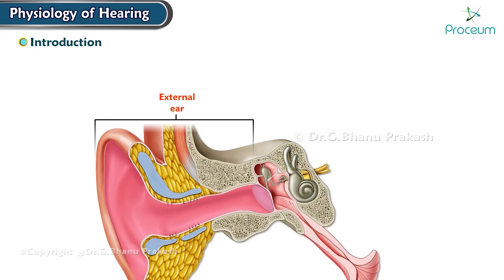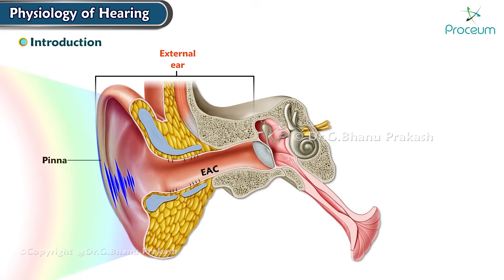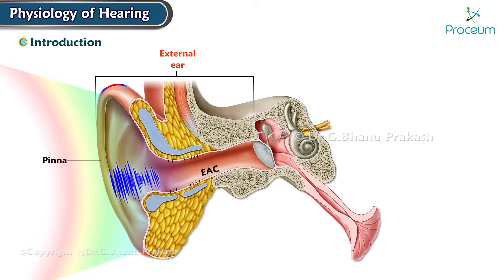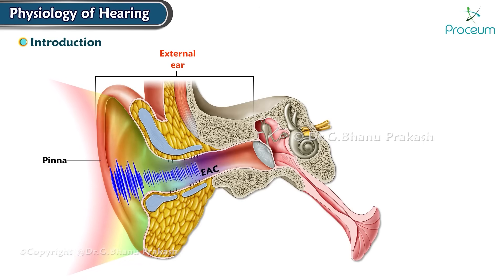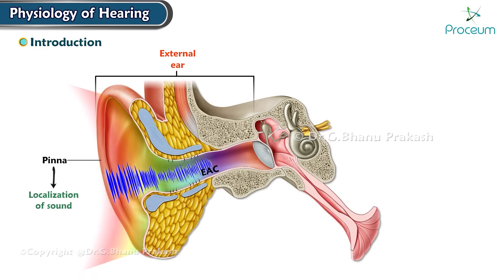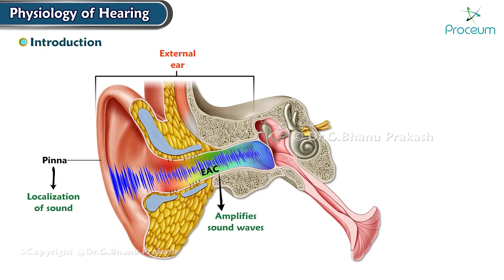The outer ear consists of the pinna and the external auditory canal. Sound waves are collected by the pinna and directed into the external auditory canal. The pinna helps in localization of sound, while the external auditory canal amplifies the sound waves.